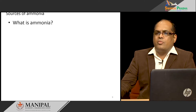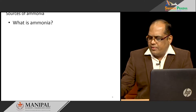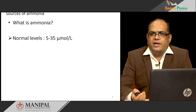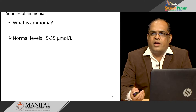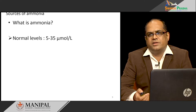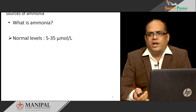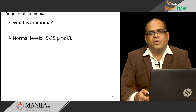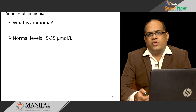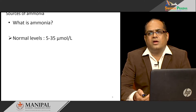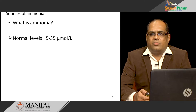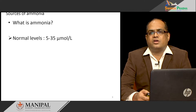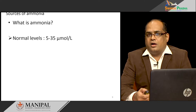The normal range of ammonia in blood is very, very low — around 5 to 35 micromoles per liter. We have to maintain the ammonia level within this narrow range. If the ammonia level increases in the blood, the condition is called hyperammonemia. This increased ammonia is toxic to the brain.